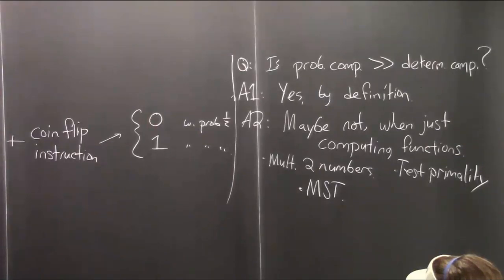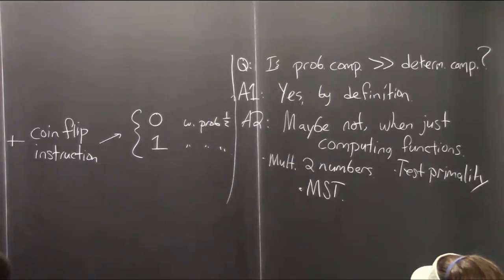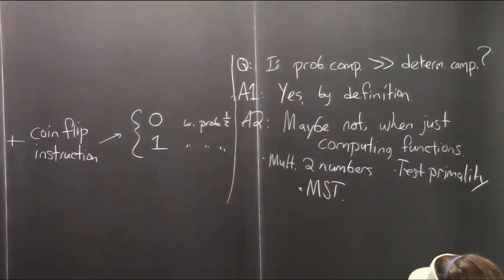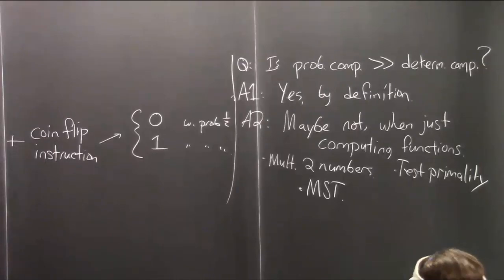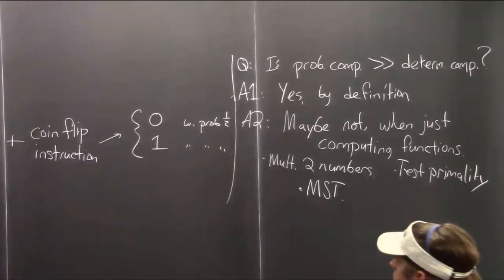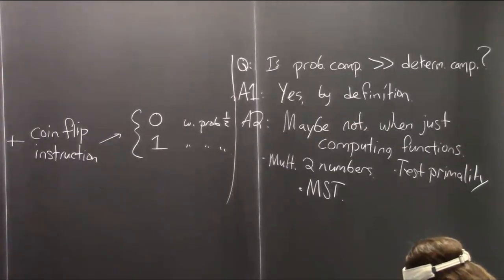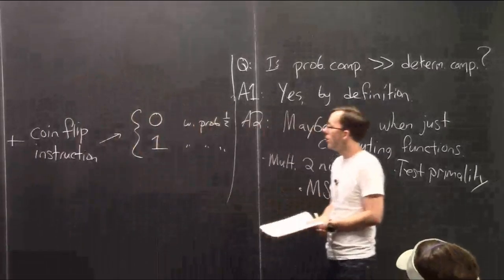If you want to compute a function in a fixed time bound and have 100% chance of getting it right, then you're basically asking for a deterministic computation. If you want to try to get something new, you have to allow your probabilistic algorithms to have some chance of failure. On the other hand, having a small chance of failure should not be viewed as a big deal. If you have an algorithm and repeat it a bunch of times, you can drive down this error probability to exponentially small — say, 2 to the minus 500. That's perfectly fine. It will literally never happen in our universe.